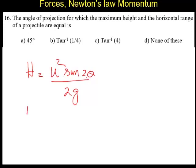Then what is the formula for range? It is U square sine 2 theta by g. Here it should be sine square, not this one. We will have this one as correct. These are the two formulas.